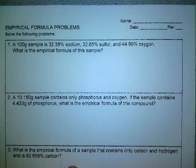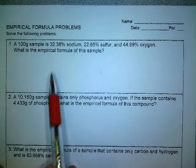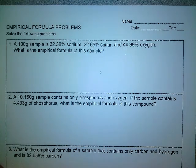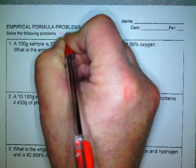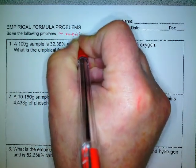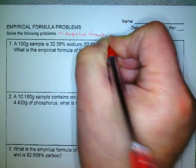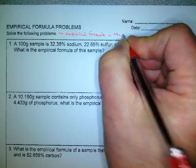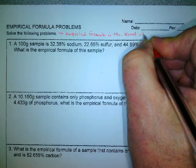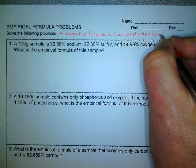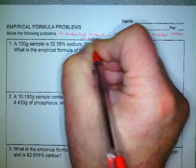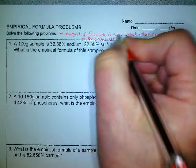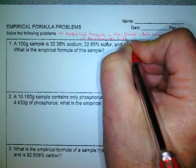We're now going to look at empirical formulas. Basically we want to take these percentages that we have and figure out what the formula for the compound would be. But we're going to find the empirical formula. An empirical formula is the lowest whole number ratio of the elements in the compound.